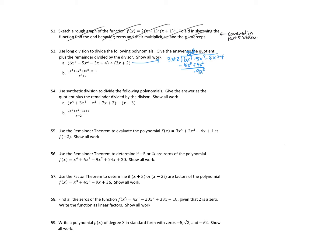So I need to multiply 3x by negative 3x to get negative 9x squared. I'm going to bring down this 3x here. And so when I multiply those, I get negative 9x squared minus 6x. And then I want to change the signs here, so I end up getting 3x plus 4. So I just do plus 1 here. So 1 times 3x plus 2 is 3x plus 2. And then when I subtract that, I get 2 as my remainder.